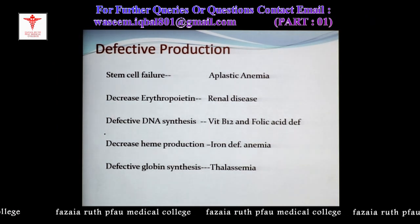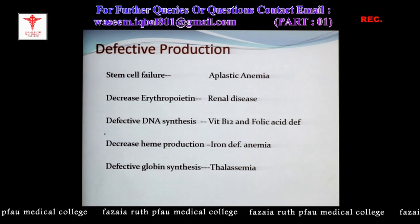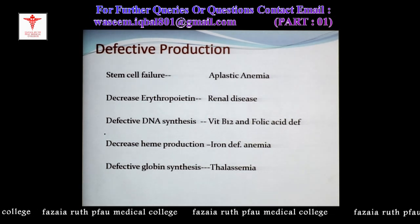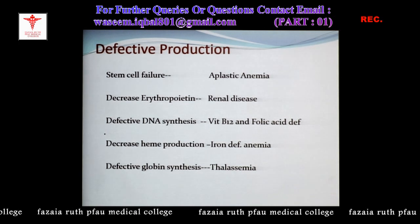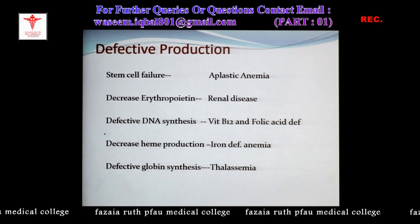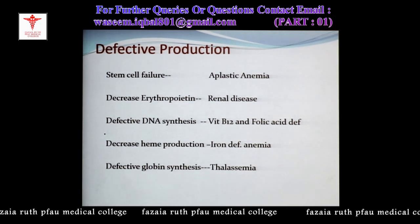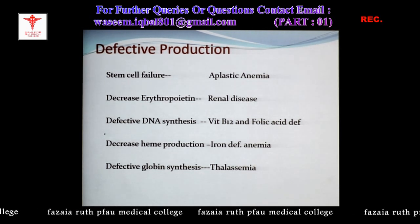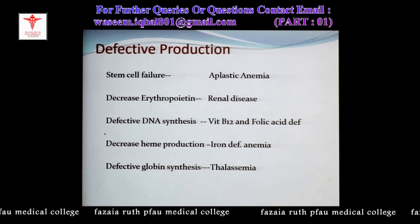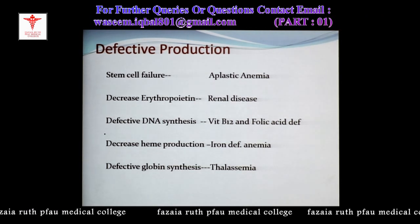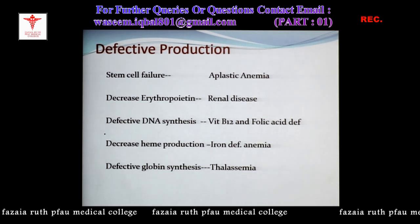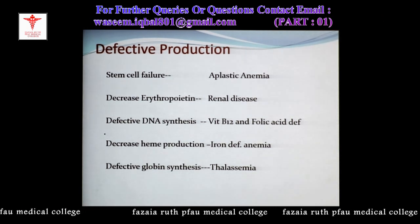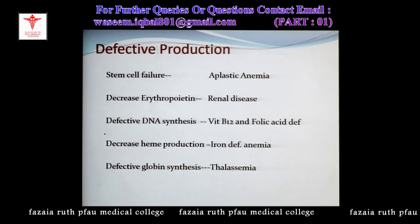Decreased heme production occurs in iron deficiency — iron is not available for heme synthesis, and iron is essential for the attachment of oxygen molecules to hemoglobin. Defective globin synthesis in thalassemia involves quantitative deficiency of hemoglobin because either the beta globin chains or alpha chains are not being formed.